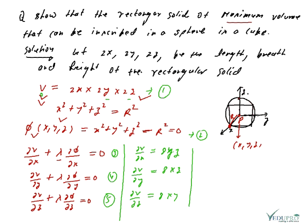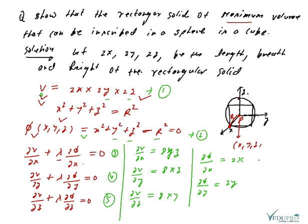Similarly, from the constraint φ = x² + y² + z² − r²: ∂φ/∂x = 2x (since y and z are constant), ∂φ/∂y = 2y, and ∂φ/∂z = 2z.